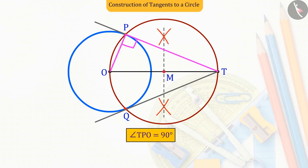Hence, the angle TPO will be a right angle. So now, can we say that TP is perpendicular to OP? Absolutely correct. These two are perpendicular to each other.